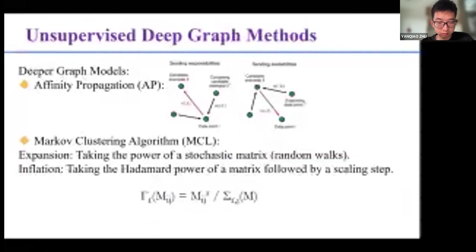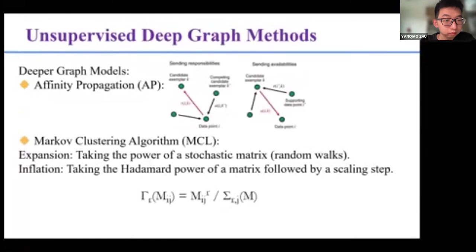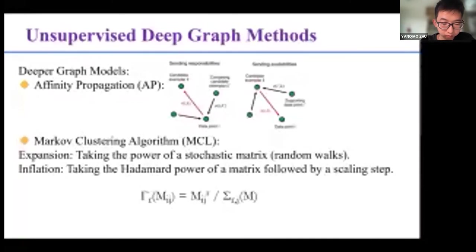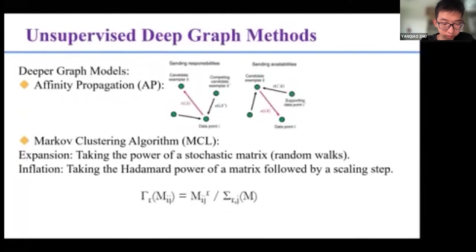We will recall the classic unsupervised graph clustering algorithms and find solutions from them. The first is the affinity propagation algorithm. With the message of responsibility network and availability network propagating between edges, AP can calculate the cluster exemplar to which each sample belongs. It achieves hundreds of iterations of message passing on the graph through a design that updates between the two metrics.